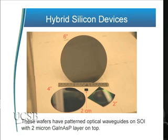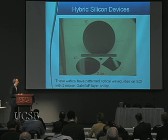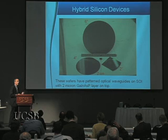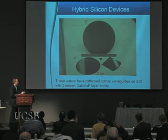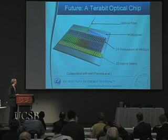We scaled up from very small devices to 2-inch, 4-inch, and now 6-inch wafers. These are all devices with SOI waveguides for routing information around the chip, covered by III-V material used to get gain, absorption, or amplification of the light signals.